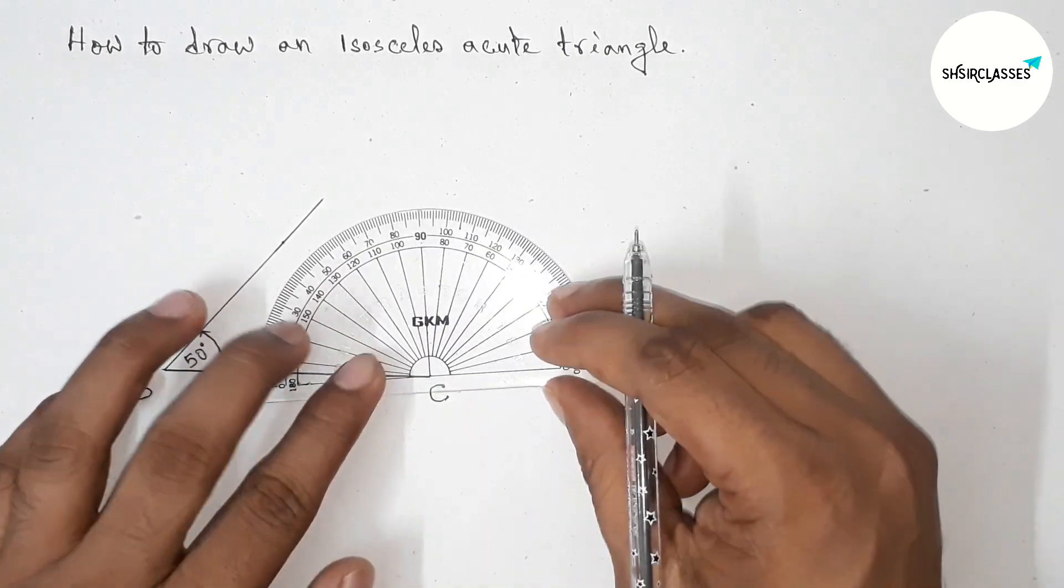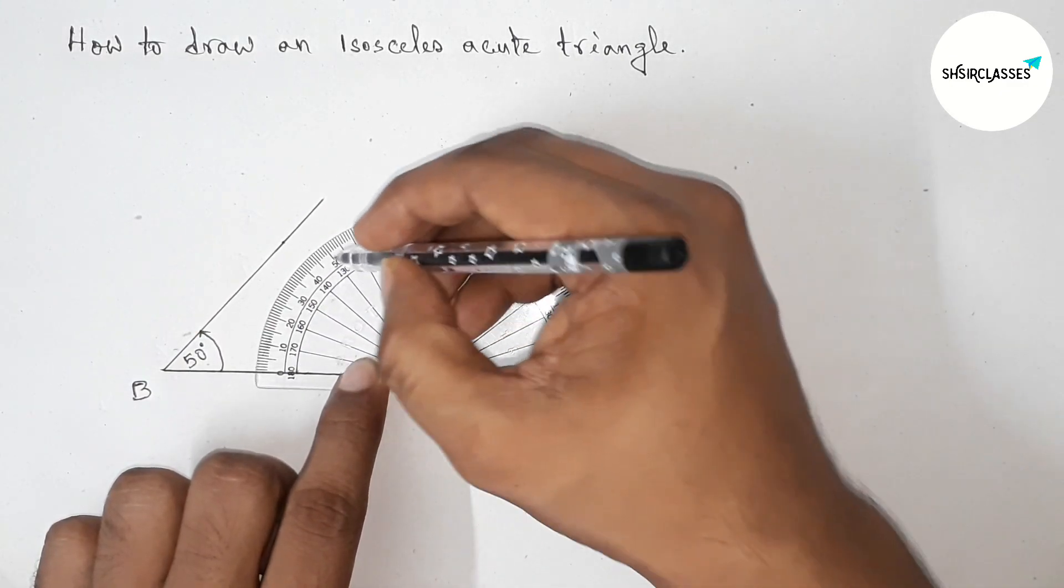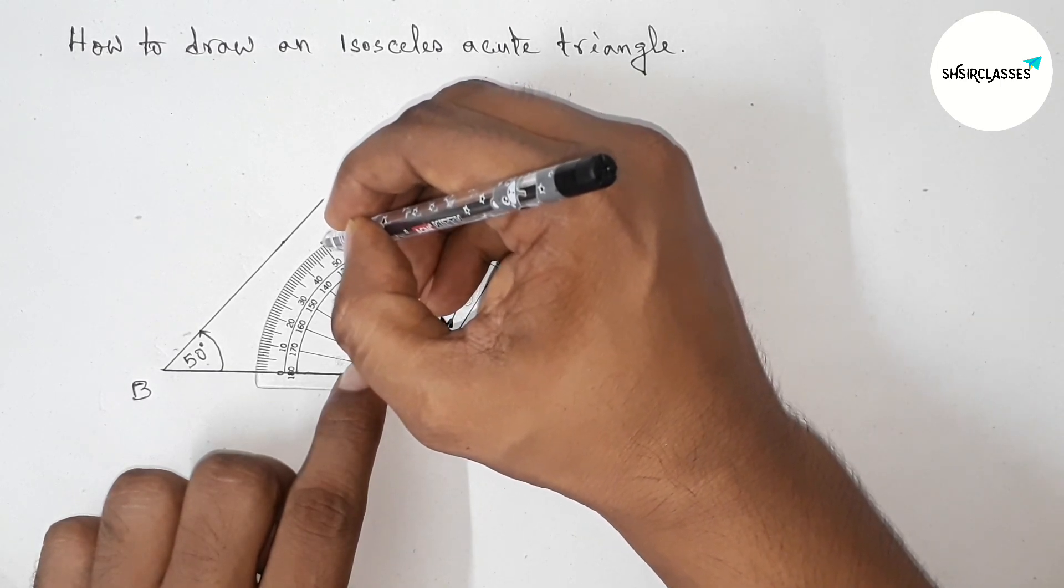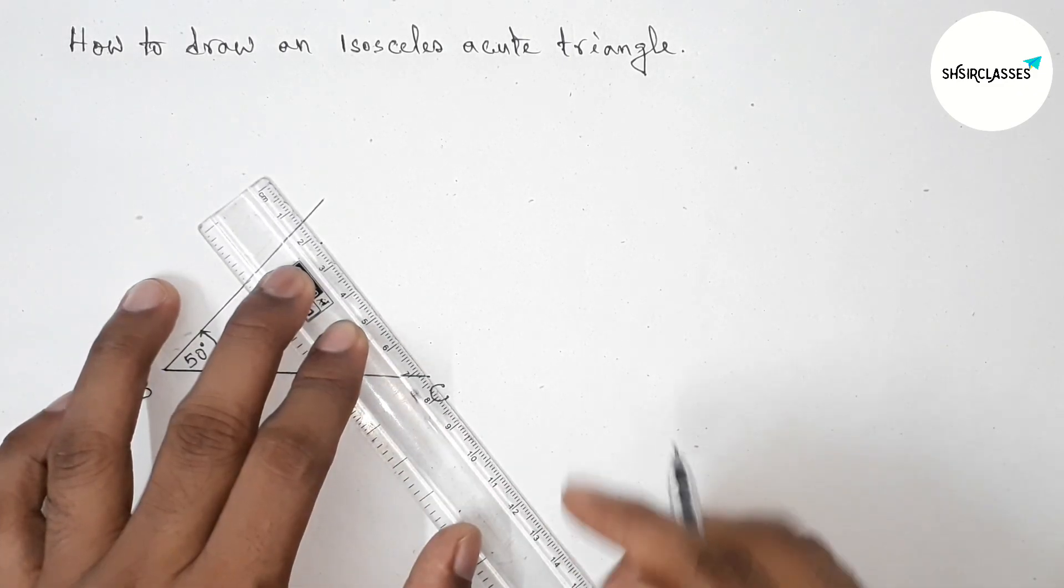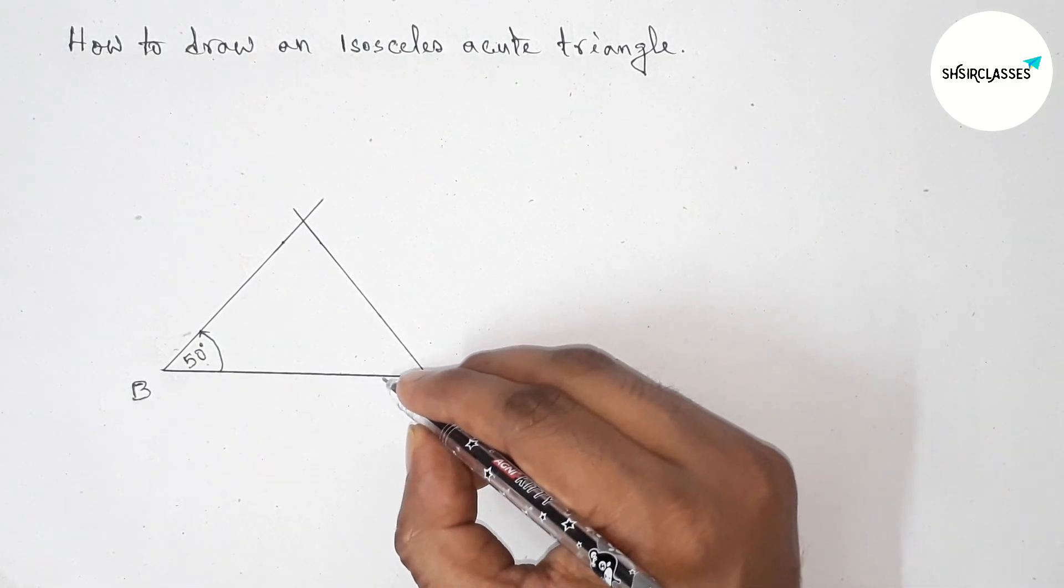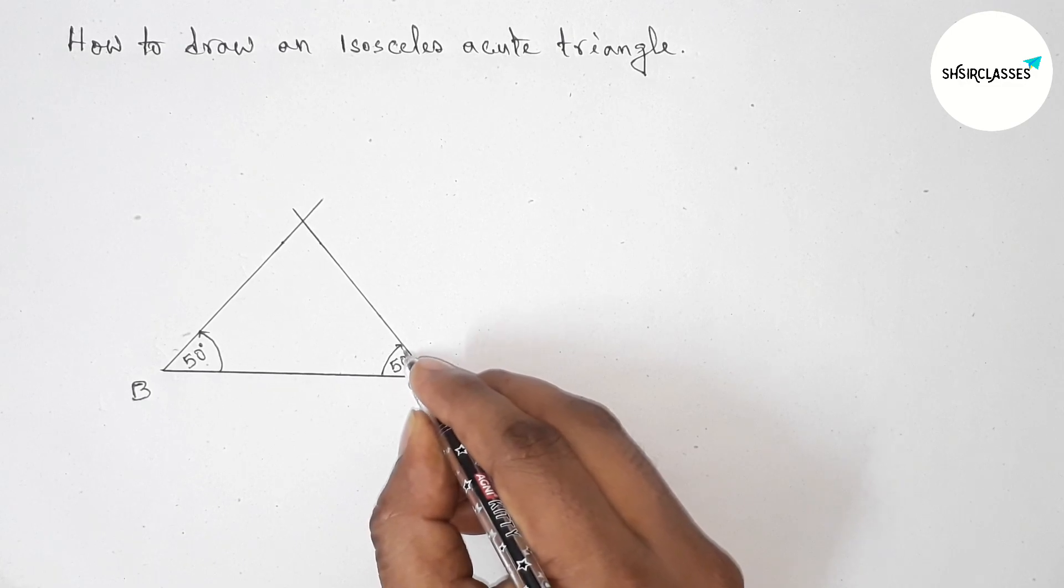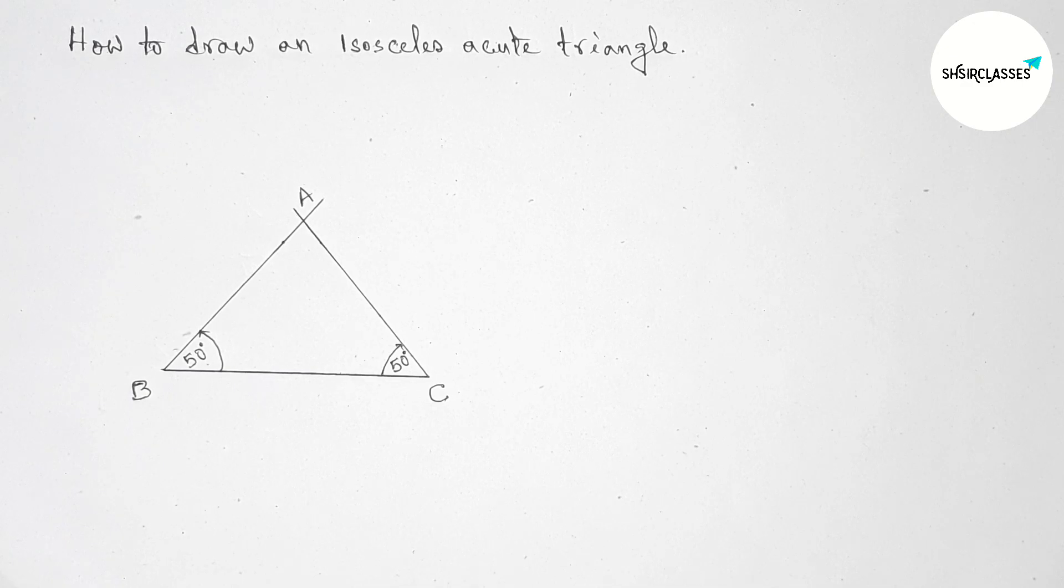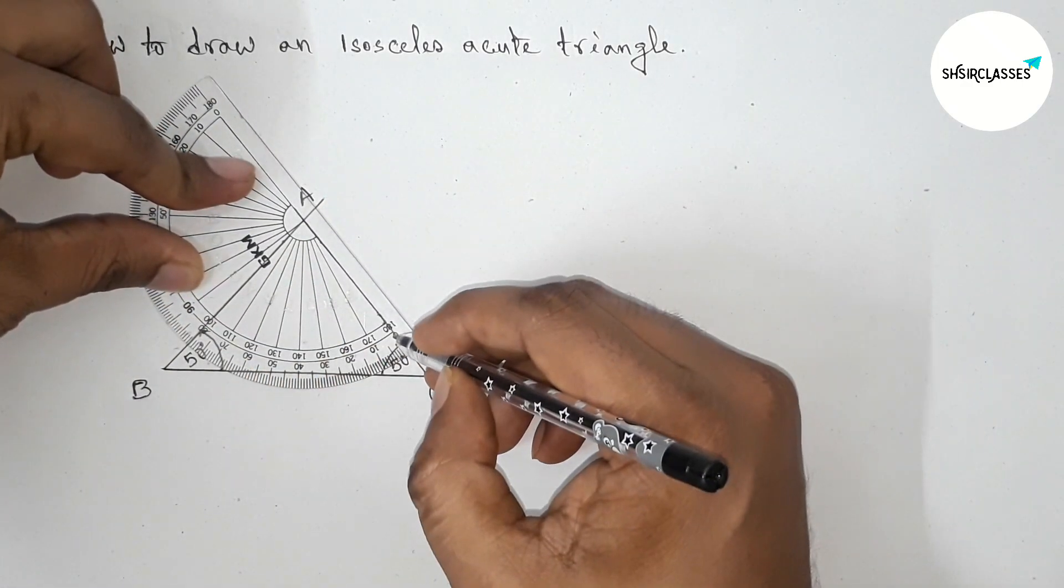Similarly, draw here a 50 degree angle on the point C, because first we have to draw an isosceles triangle. So this is 50 degrees. Now joining this line, angle C is also 50 degrees. You can choose both angles as 55, 55. Now take point A and check angle A.